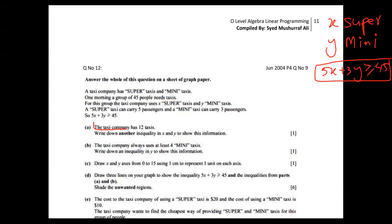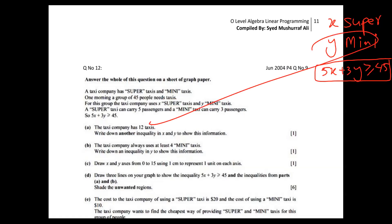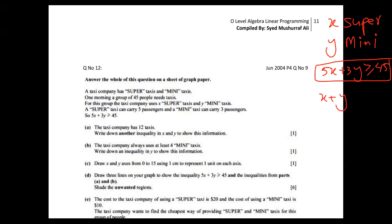The taxi company has 12 taxis total. Some students get confused — he's not talking about super or mini separately, he's talking about all taxis. All taxis means X plus Y. Some students think it equals 12, but it's an inequality. Bigger than 12 is not possible because he only has 12 taxis. So naturally it's X plus Y less than or equal to 12.